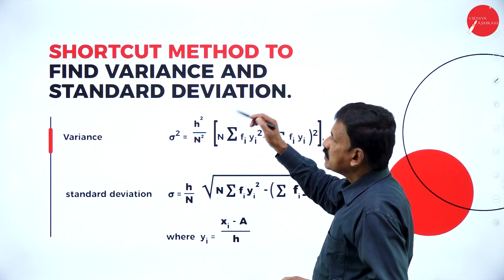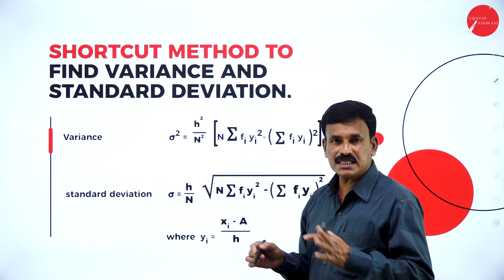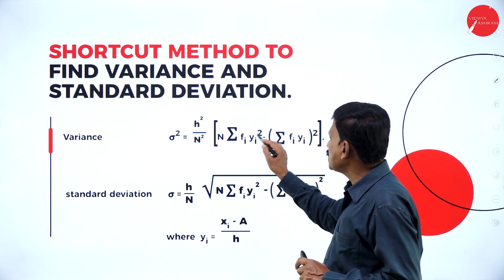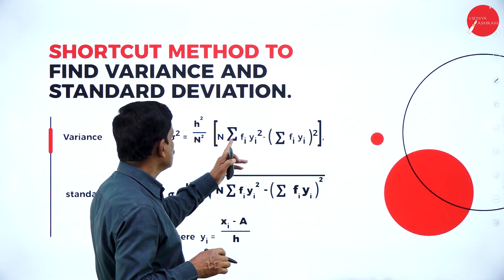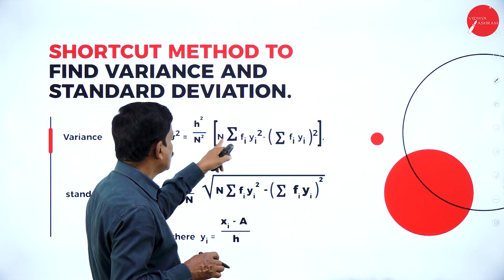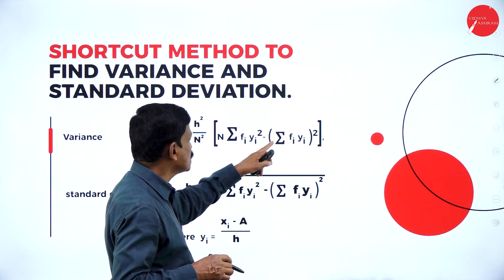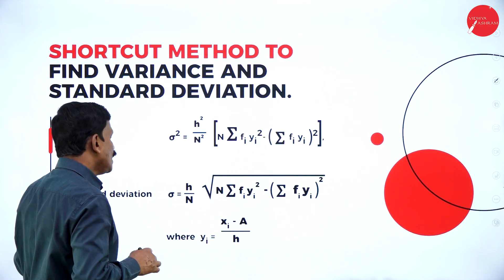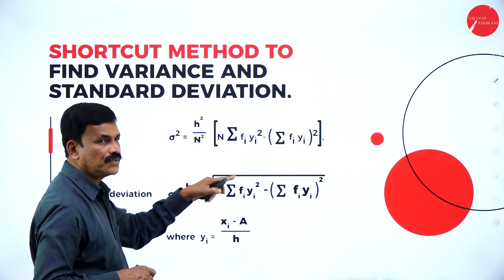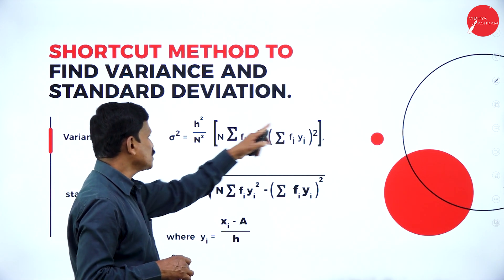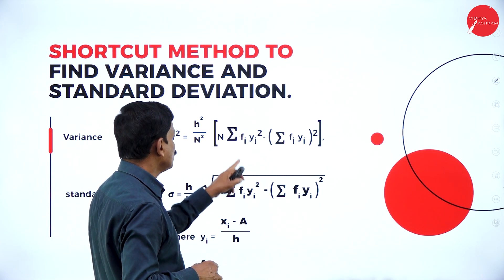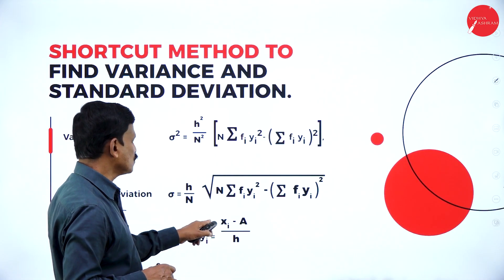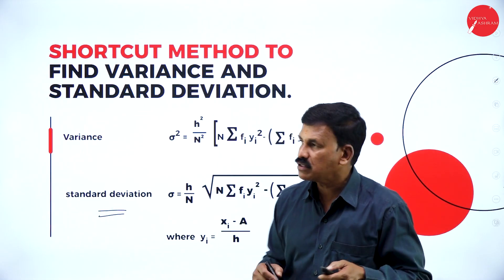Now move on to a similar type problem. The next concept is the shortcut method to find the variance and standard deviation. Variance is given by rho squared equals h squared by n squared into n times sigma fi yi squared minus sigma fi yi whole square. And the standard deviation rho equals h by n into square root of n times sigma fi yi squared minus sigma fi yi whole square. Here yi is equal to xi minus A divided by h — this is the formula we are going to use.